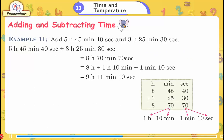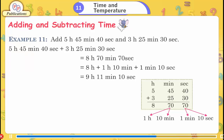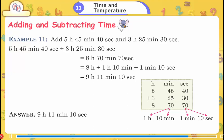Example 11: Add 5 hours 45 minutes 40 seconds and 3 hours 25 minutes 30 seconds. 5h 45m 40s + 3h 25m 30s = 8h 70m 70s. Converting: 70s = 1m 10s, so 8h 71m 10s; 71m = 1h 11m, giving 9 hours 11 minutes 10 seconds.